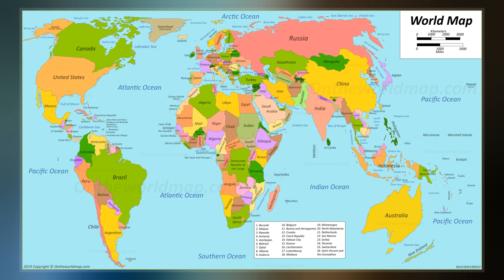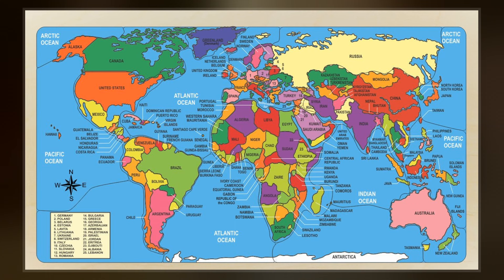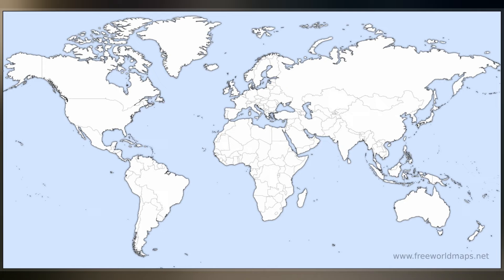With exploration that began during the European Renaissance, knowledge of the Earth's surface accumulated rapidly, such that most of the world's coastlines had been mapped, at least roughly, by the mid-1700s and the continental interiors by the 20th century. Maps of the world generally focus either on political features or on physical features.